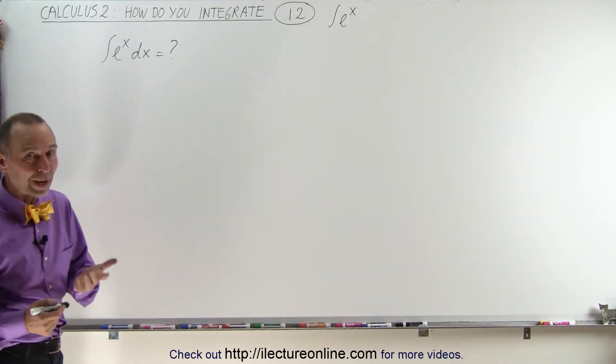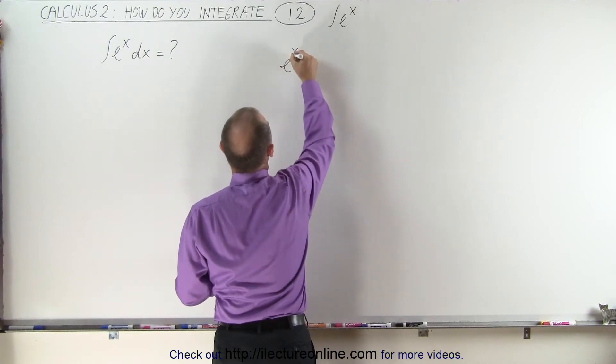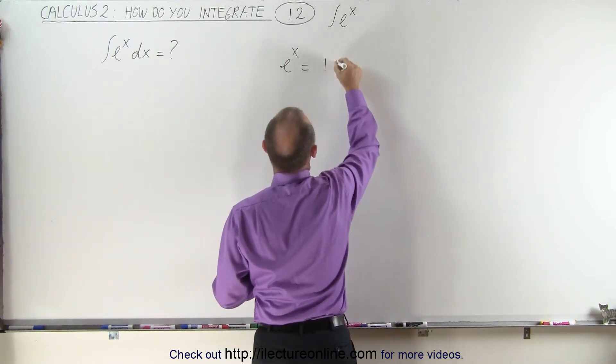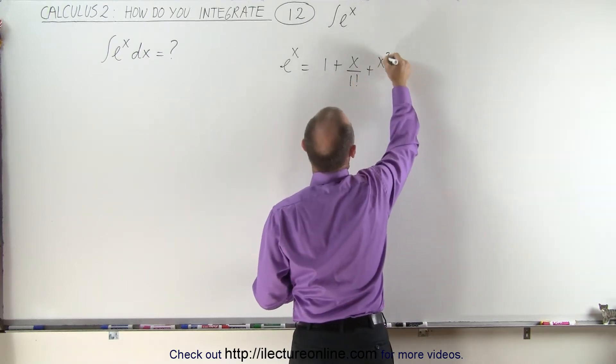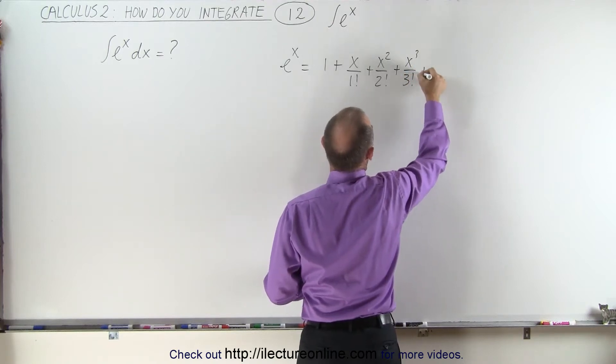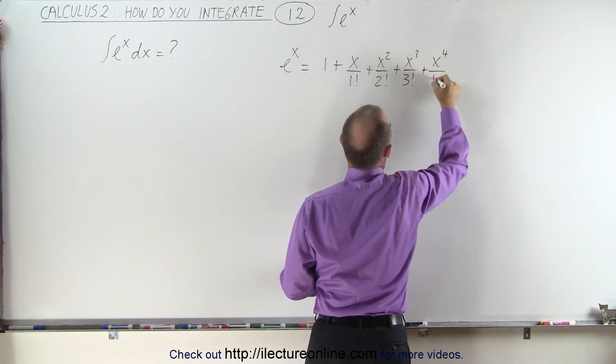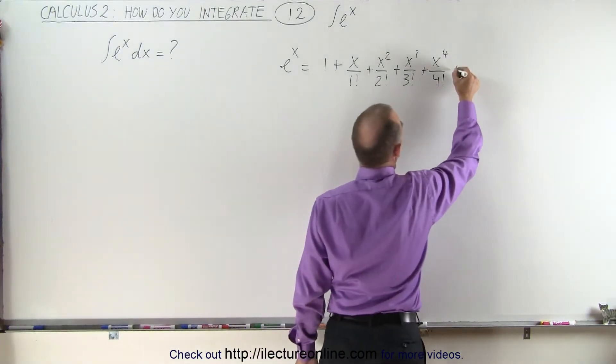Well, let's see here. We can actually write e to the x as an infinite sum. e to the x equals 1 plus x over 1 factorial plus x squared over 2 factorial plus x cubed over 3 factorial plus x to the 4th over 4 factorial and so forth. This continues on forever.